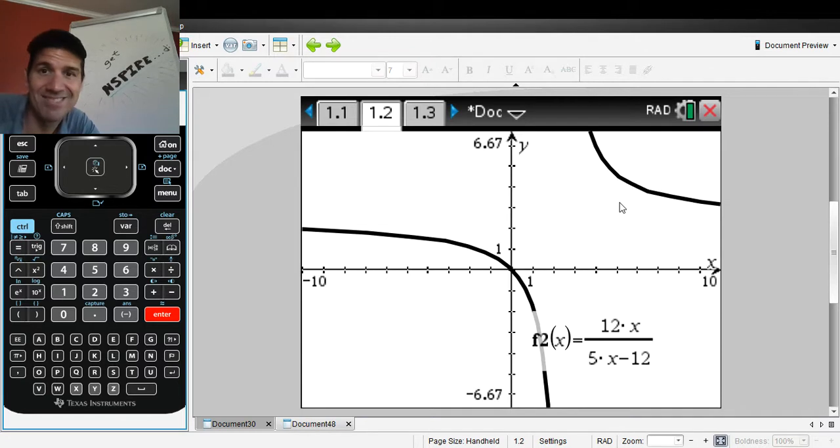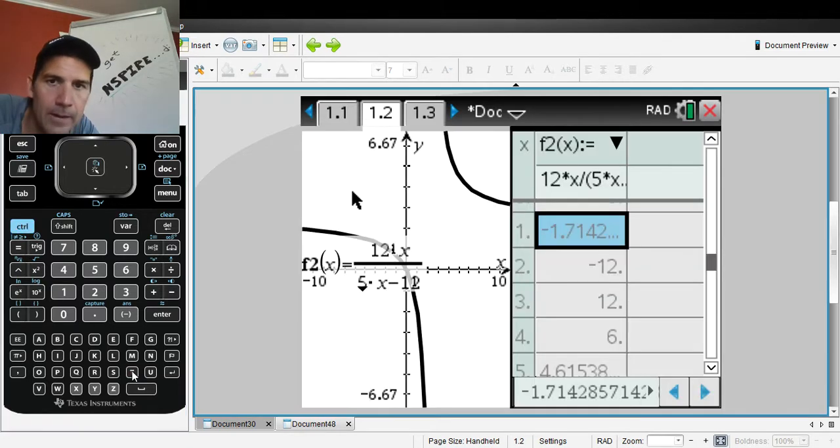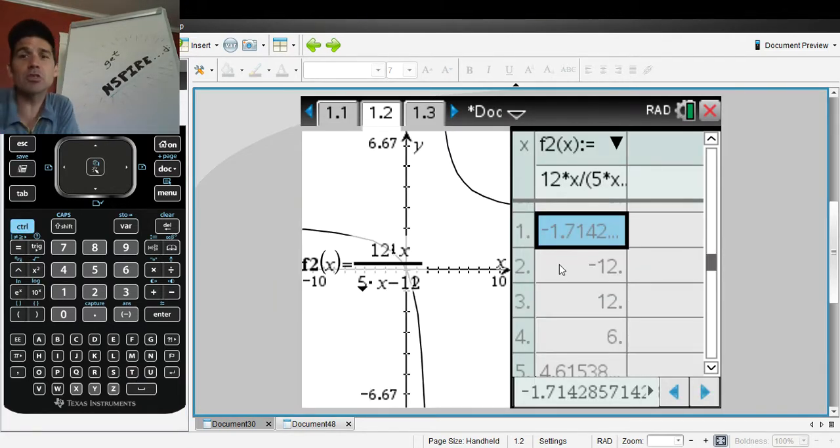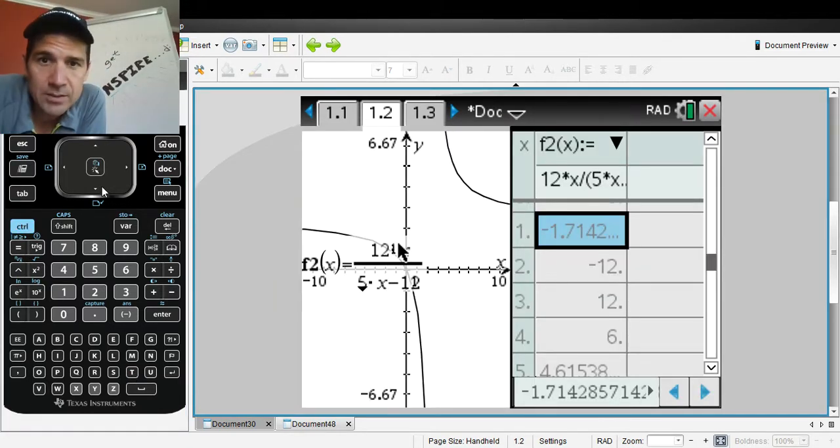There's what your graph looks like. Again, you don't care about the graph. You want the table. Control T. You find your table. Control T. There's your table. And then you just have to scroll down. Scroll down until you find some values that work.